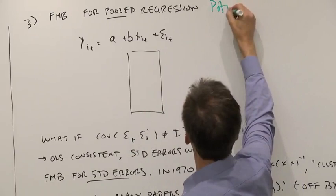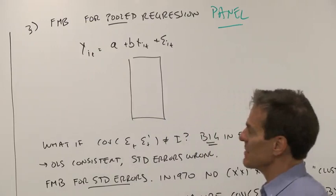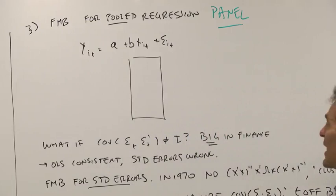A panel regression, it's a regression where you have both an i and a t subscript, and this happens all the time in both finance, corporate finance, and macroeconomics, where you're looking, say, across companies as well as over time.